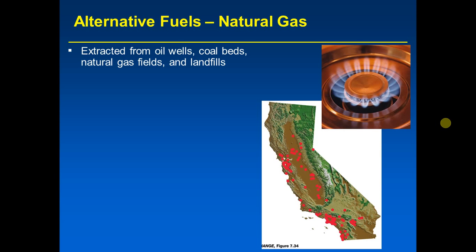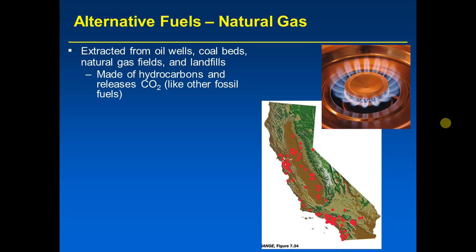Natural gas is made of hydrocarbons and releases carbon dioxide like other fossil fuels, along with other greenhouse gases. Natural gas is mostly methane (CH₄), generally 70–90% methane, with smaller amounts of ethane (C₂H₆), usually 5–15% ethane. Anywhere from around 75% to near 100% of natural gas is going to be methane and ethane. There are very small percentage amounts of propane (C₃H₈) and butane (C₄H₁₀).